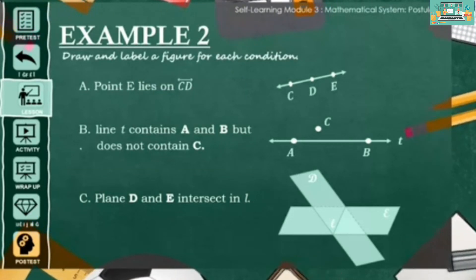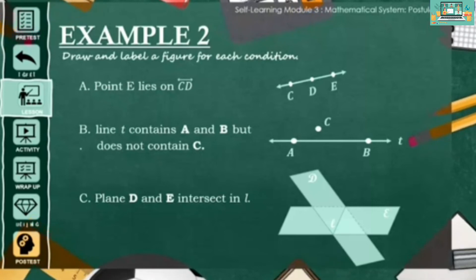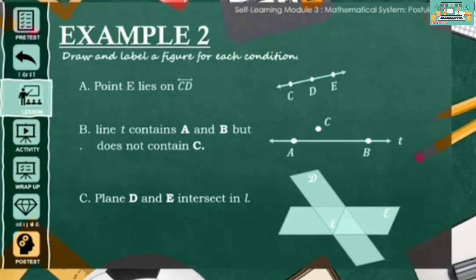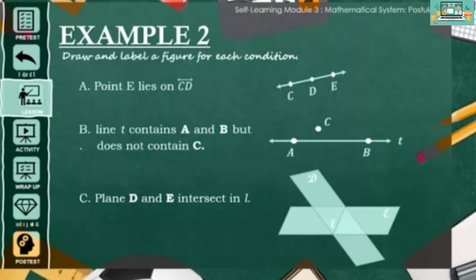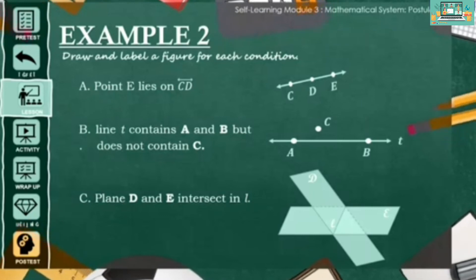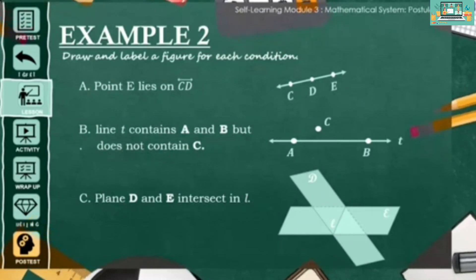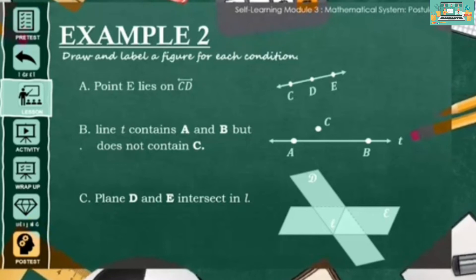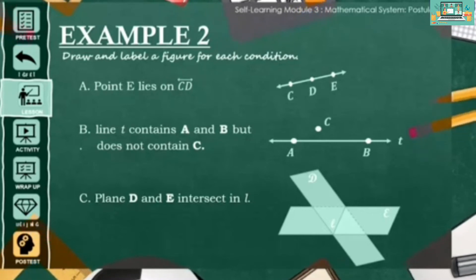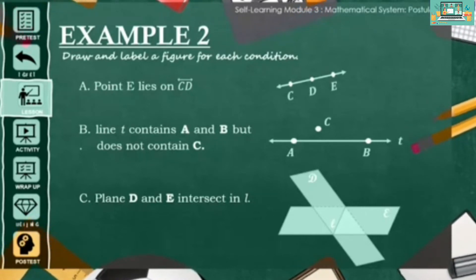Next, draw line T containing point A and B but does not contain point C. Correct. You have to remember that point C must not lie on line AB.